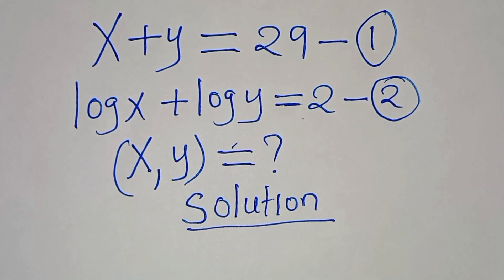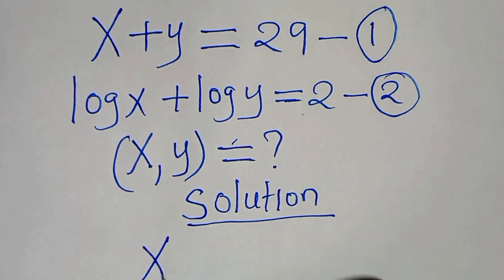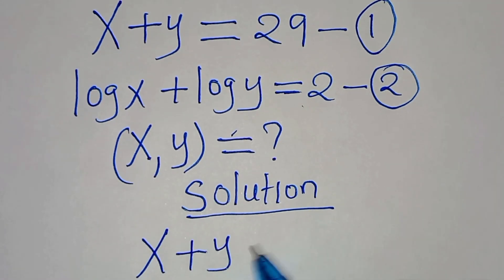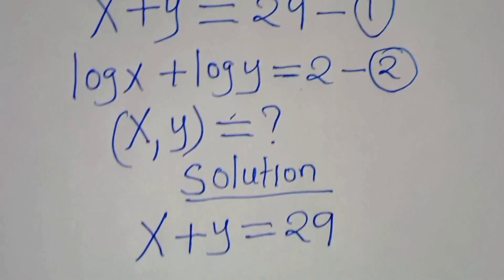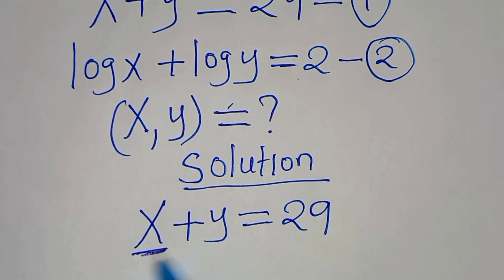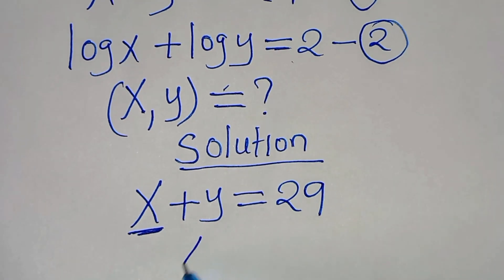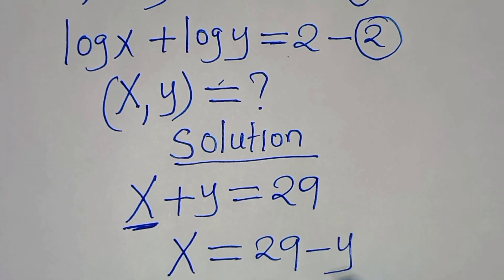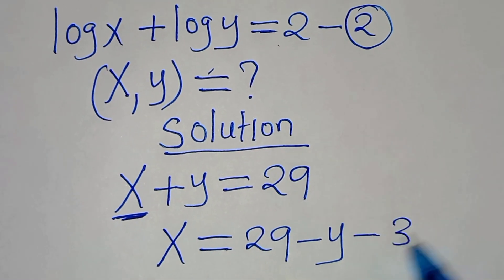From equation 1, which is x plus y equals 29, let's make x the subject of the formula so that x will be equal to 29 minus y. Let's call this equation 3.